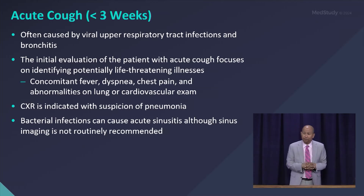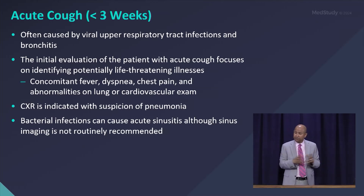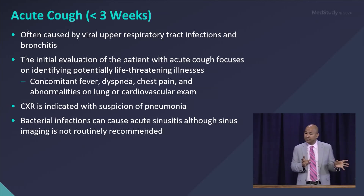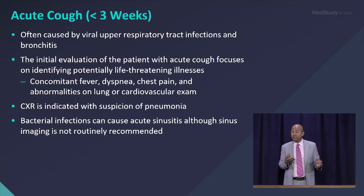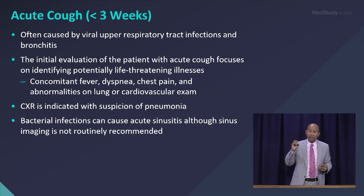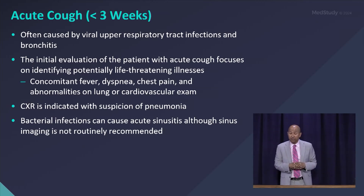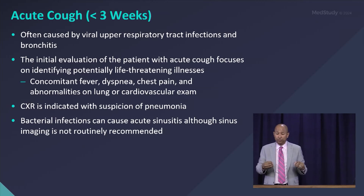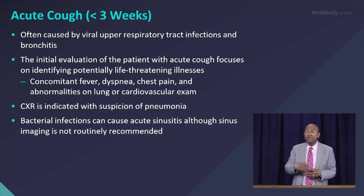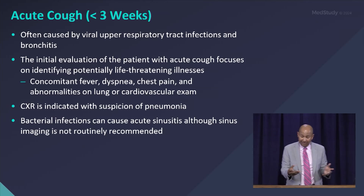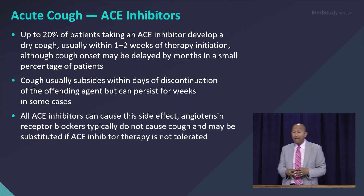Acute cough — I can't do a pulmonary talk without addressing this, especially in the outpatient setting. The number one cause is always going to be a virus, maybe some bronchitis. Etiology really depends on the history and physical exam; you always want to rule out detrimental things like high-grade fevers and chest pain. I wouldn't get chest X-rays on everyone unless you suspect bacterial pneumonia, and I wouldn't give antibiotics to everyone unless I truly suspect bacterial sinusitis — imaging doesn't confirm bacterial sinusitis, as we see that with viral sinusitis all the time.